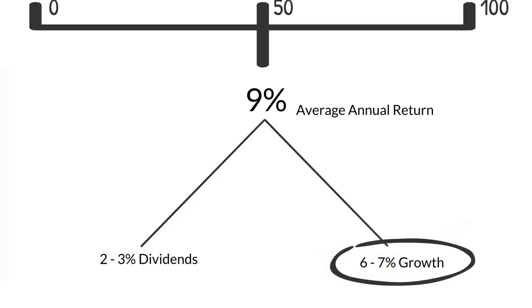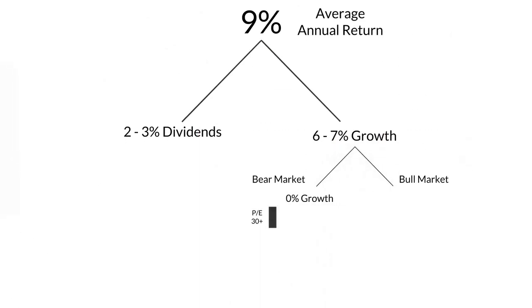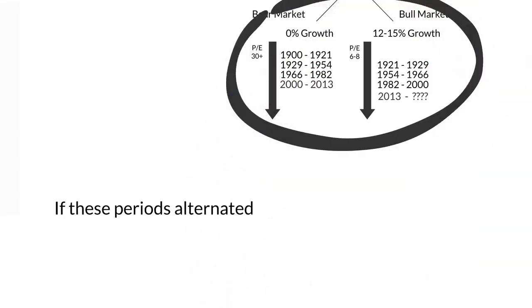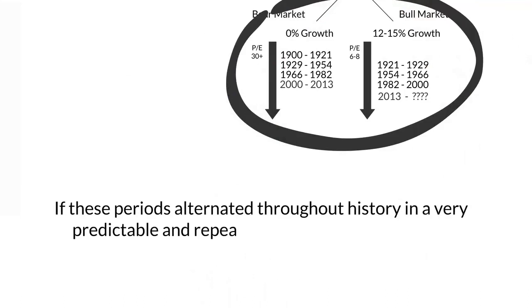What if that 6 to 7 percent growth came in clumps over long periods of time? What if, historically, there were long periods of time where the market yielded zero growth and long periods when the market yielded double digit growth? If these periods alternated throughout history in a predictable and repeatable fashion, would you want to have access to this information?